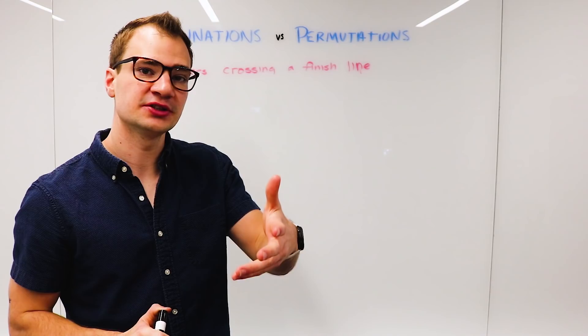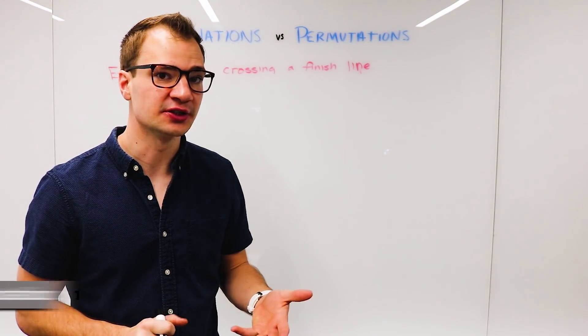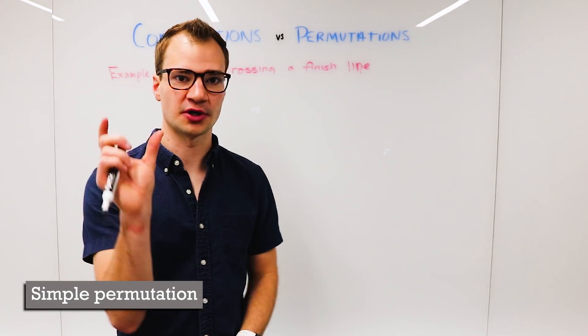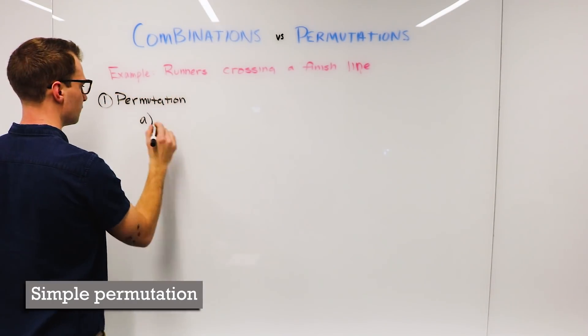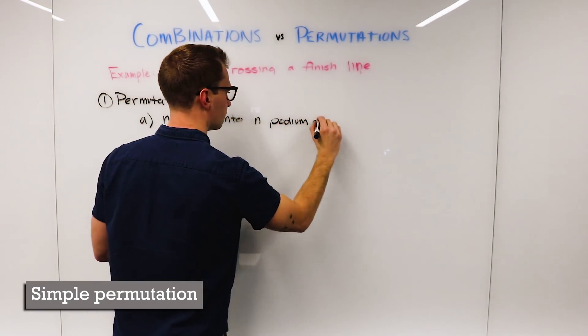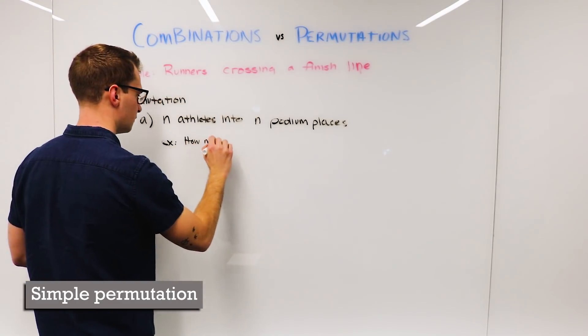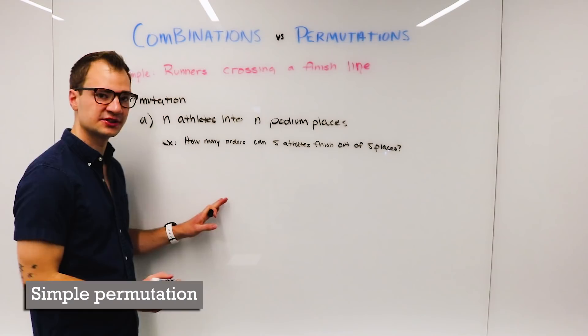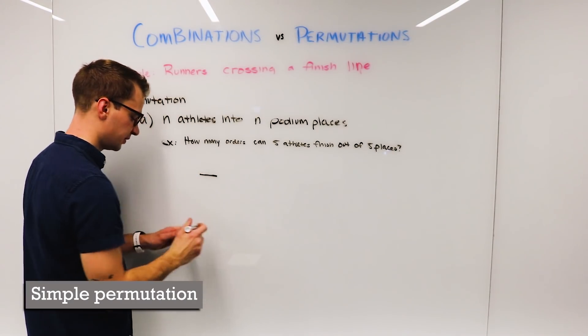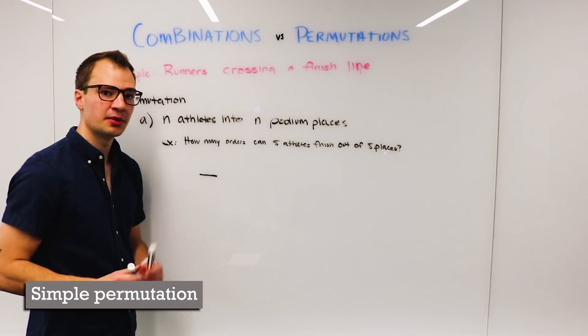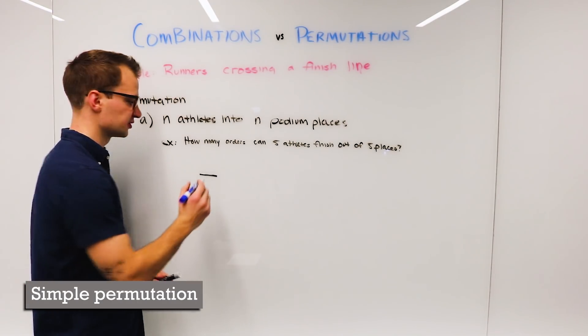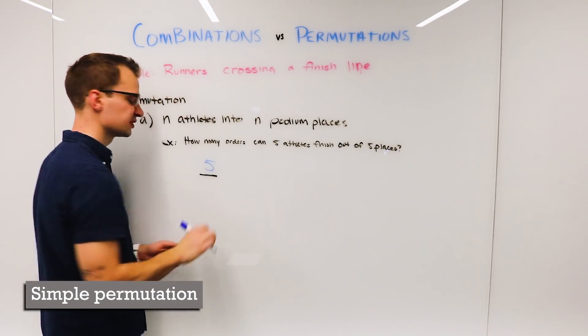Now the most simple version is actually still a permutation, but it's where the number of athletes exactly matches the number of podium places. When I come across the line, first place can be filled by five different people. Any one of those runners could come in first place. So this number is five.